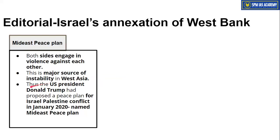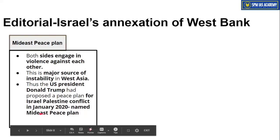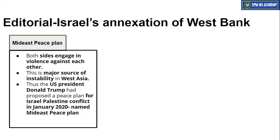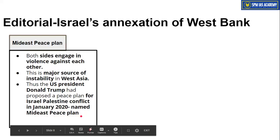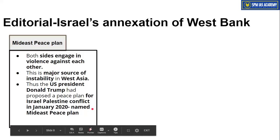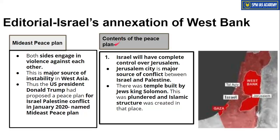Due to ongoing conflict, US President Donald Trump proposed a peace plan in January 2020 called the Mid-East Peace Plan. As covered in the 21st May 2020 analysis, the US completely supports Israel — because there are many influential Jewish people in the US whose influence keeps the US supporting Israel. So naturally, this peace plan would be more in favor of Israel.